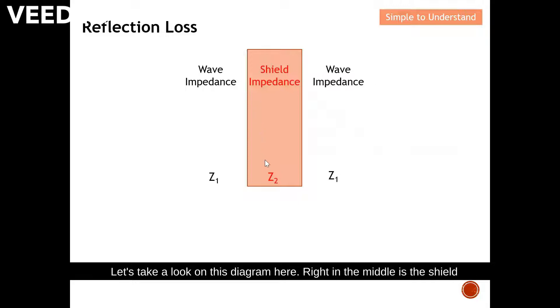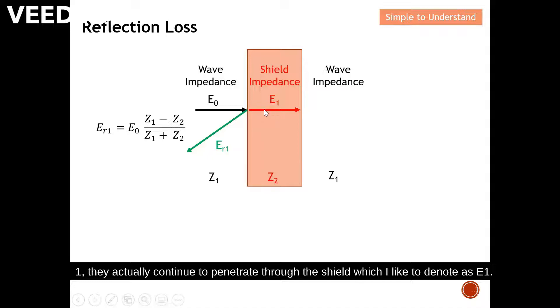Let's take a look at this diagram. Here, right in the middle is the shield with a characteristic impedance as I denote as Z2. On both sides of the shield is the wave impedance. I like to denote the characteristic impedance as Z1. When a field, for this case, an electric field hits the shield, this will result in two fields. One, they actually continue to penetrate through the shield, which I like to denote as E1. Another field will be actually refracted back, which I like to denote as ER1.